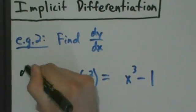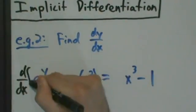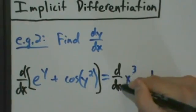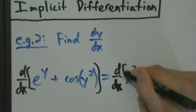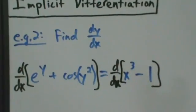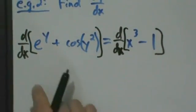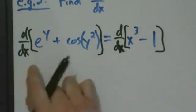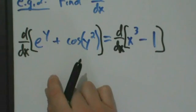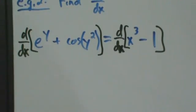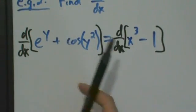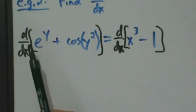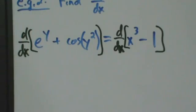So d/dx of the left equals d/dx of the right. On the left side, we differentiate term by term. For d/dx of e to the y, it might look a little goofy if you're not used to implicit differentiation yet, but remember y is just a function of x, and we know how to differentiate e to the power of functions of x — we just use the chain rule.